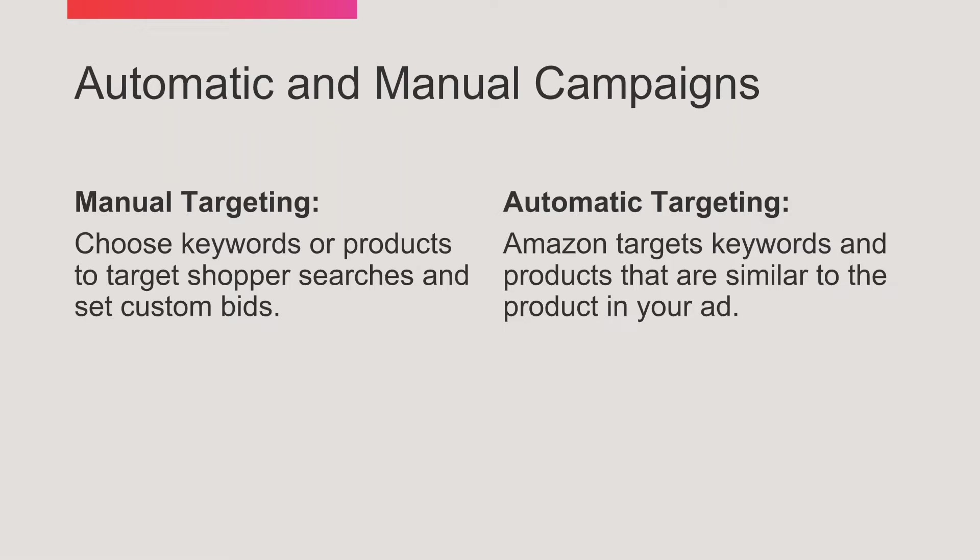Within targeting, we also have manual or automatic. Amazon pay-per-click advertising is an auction-style format. If I'm a brand selling a power bank and Alex also has a brand selling a power bank, we're competing against each other on the same search term. I might be willing to pay $1.50 to bid on 'power bank,' but Alex has deeper pockets and is willing to pay $2. Amazon is going to choose the highest bidder for a given keyword.